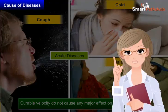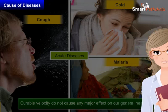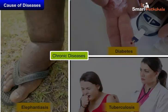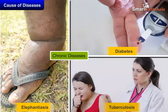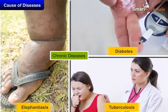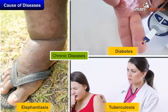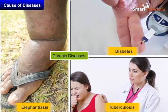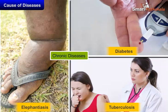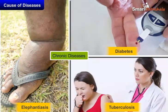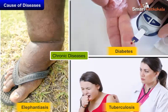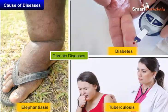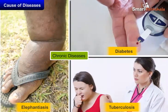Next, we will discuss chronic diseases. Some diseases like elephantiasis, diabetes, and tuberculosis last for a long time — even as much as a lifetime — and are called chronic diseases. These diseases are not curable and cause a major effect on our general health.